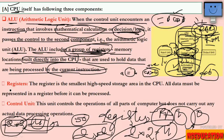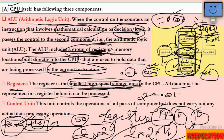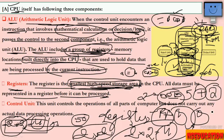Registers are the smallest high-speed storage areas in the CPU. They are very small in size but very fast. All data must be represented in a register before it can be processed. For example, when I input 2 to the computer, it becomes 0010 in binary, and it first goes into a register, and then the instruction is also stored before addition happens.